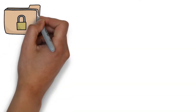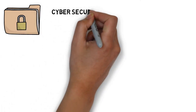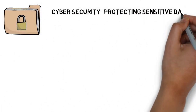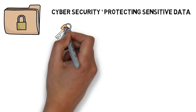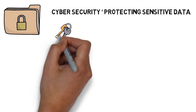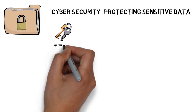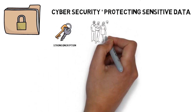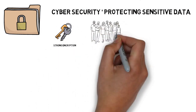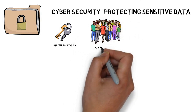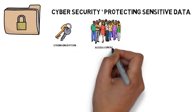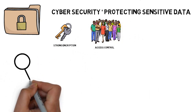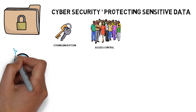Cyber security is all about protecting an organization's assets, like sensitive information such as company data. Different techniques can be used, from strong encryption to making sure only those people who are authorized to use the data have access. This is known as access control, and it can ensure unauthorized people are kept out.